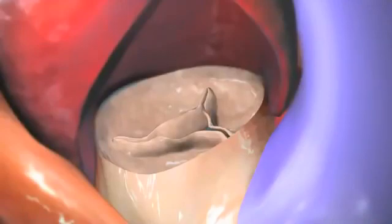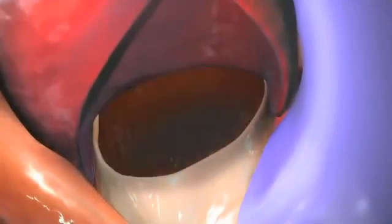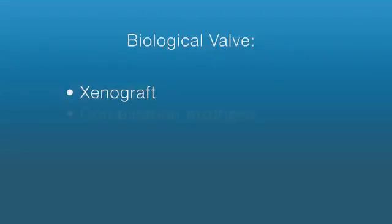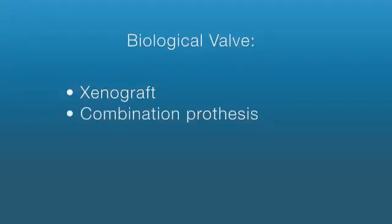Your surgeon may replace the damaged valve with a mechanical valve or a biological valve. The biological valve may be a xenograft, which is made completely from animal tissue; a combination prosthesis, which is composed of animal tissue sewn into a synthetic frame; or a homograft, which is a valve donated from a human heart.